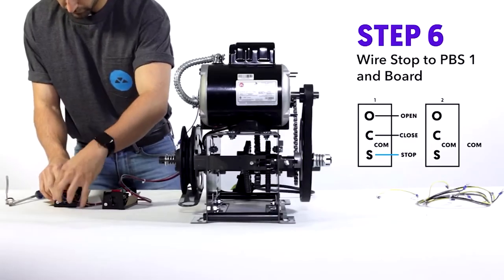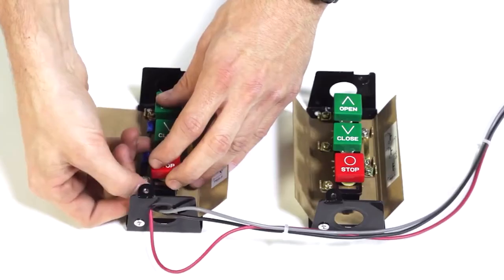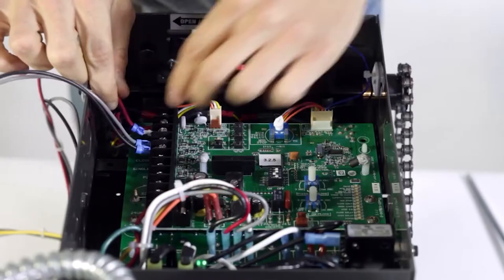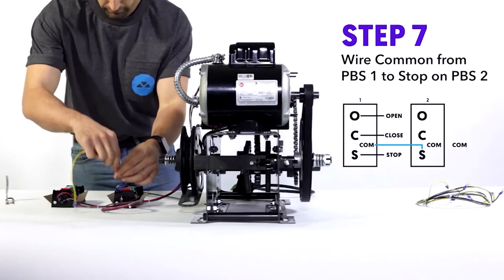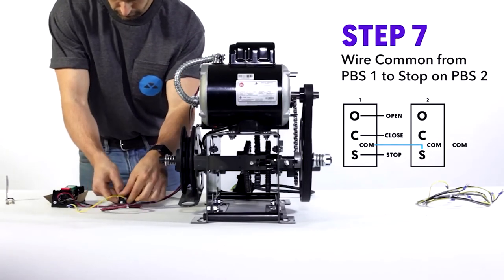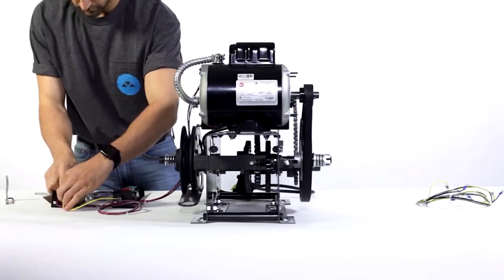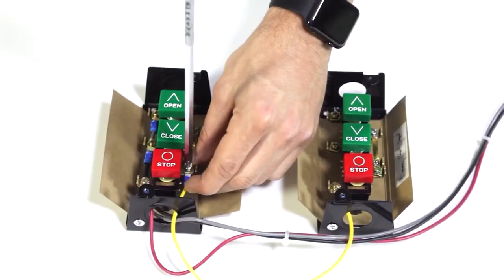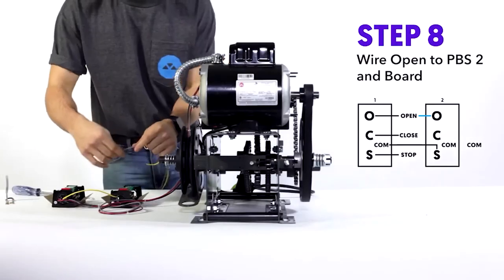Step six, you got it. Stop from push-button one to stop on the board. There we go. Step seven, here's where it changes a little. You wire common from push-button station one to stop on push-button station two. Now you can do this through a junction box or in the operator itself.